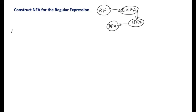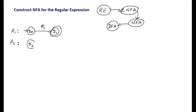Suppose r1 is a regular expression. The equivalent finite automata has q0 as a starting state; q0 on r1 moves to state q1, and q1 is the final state. Similarly, r2 is also a regular expression. For r2, we use q2 as the starting state; q2 on r2 moves to state q3, and q3 is the final state.